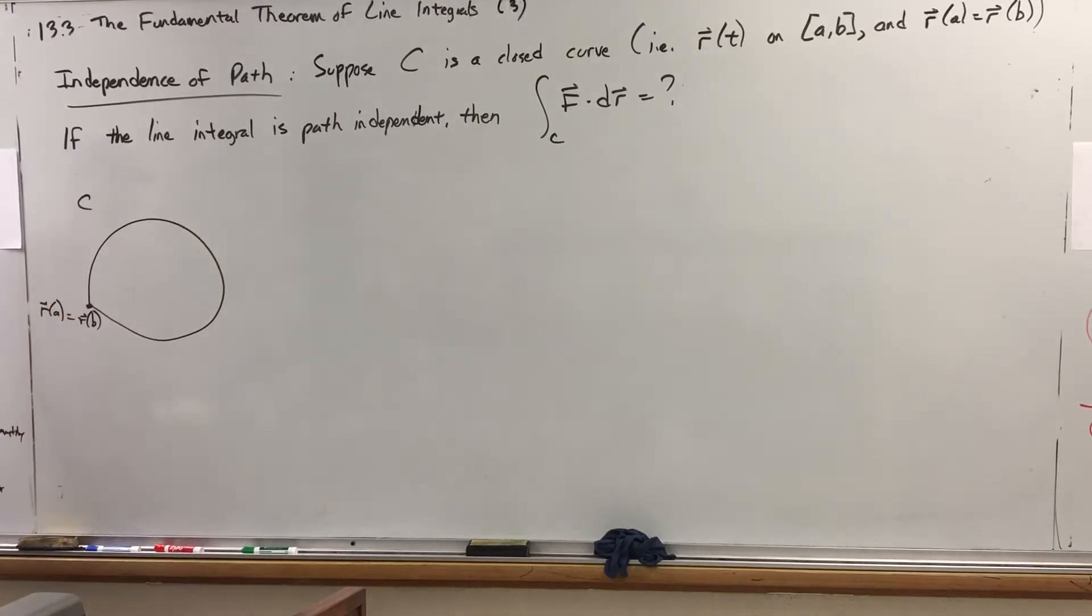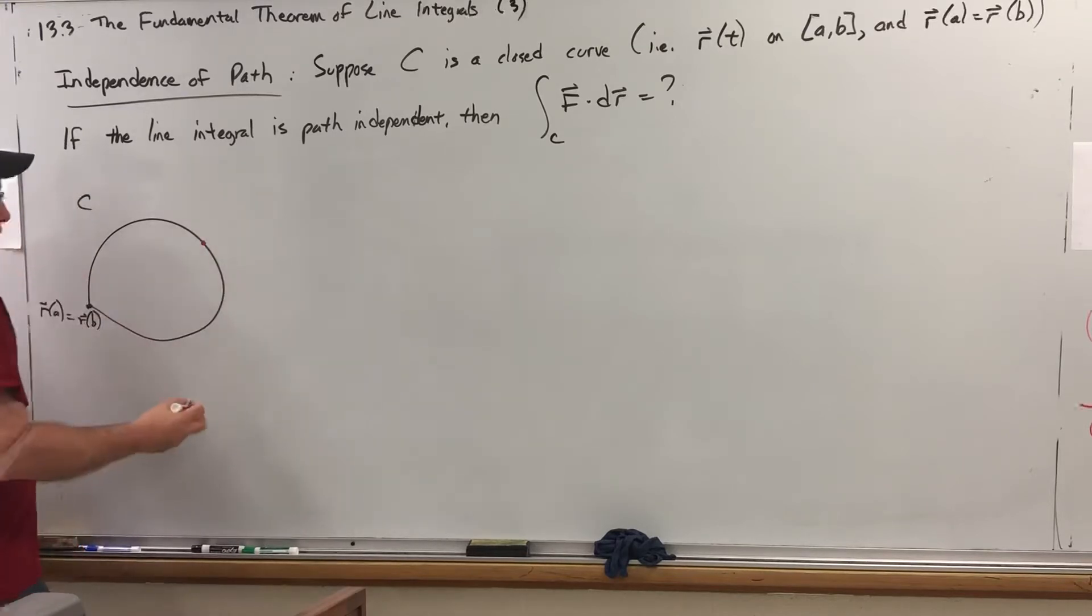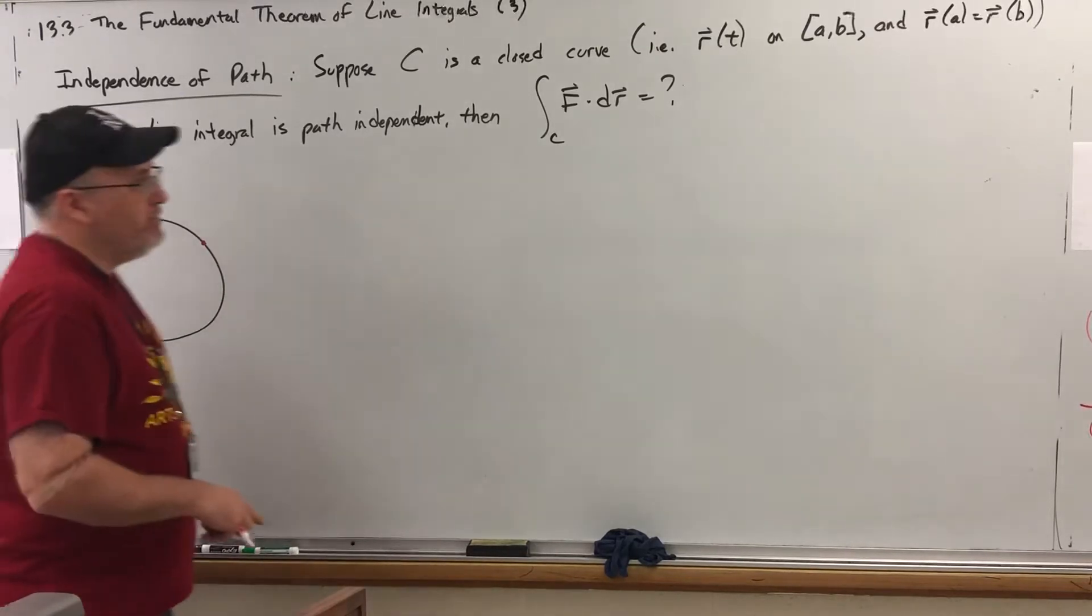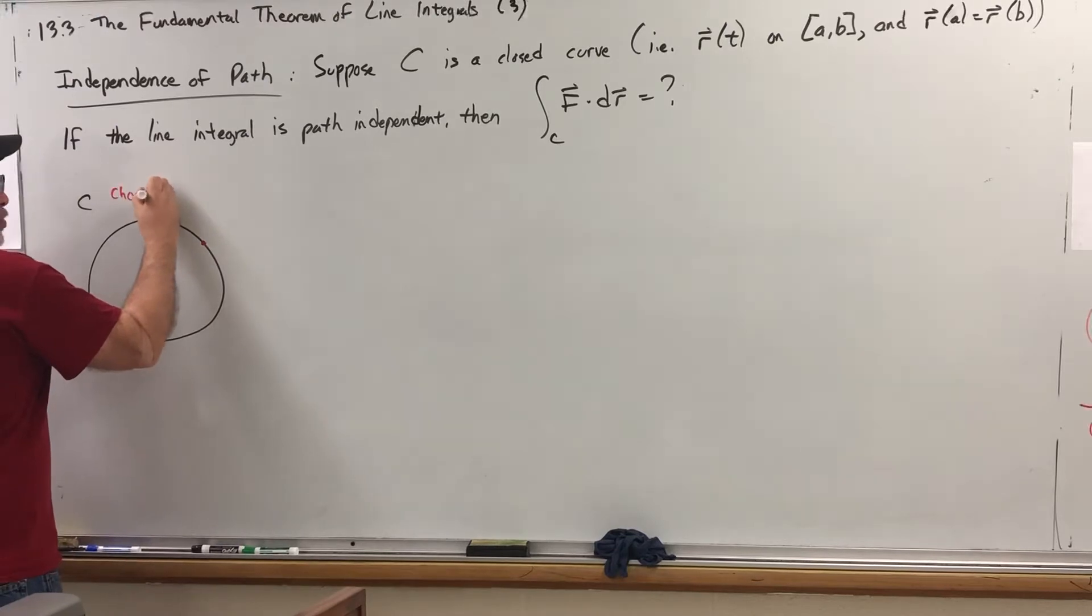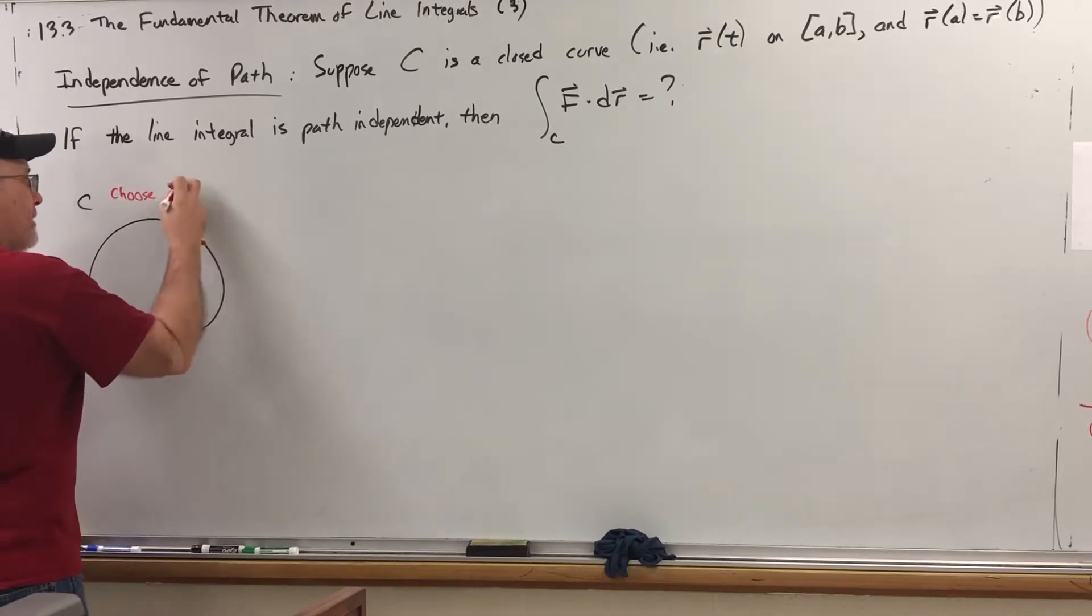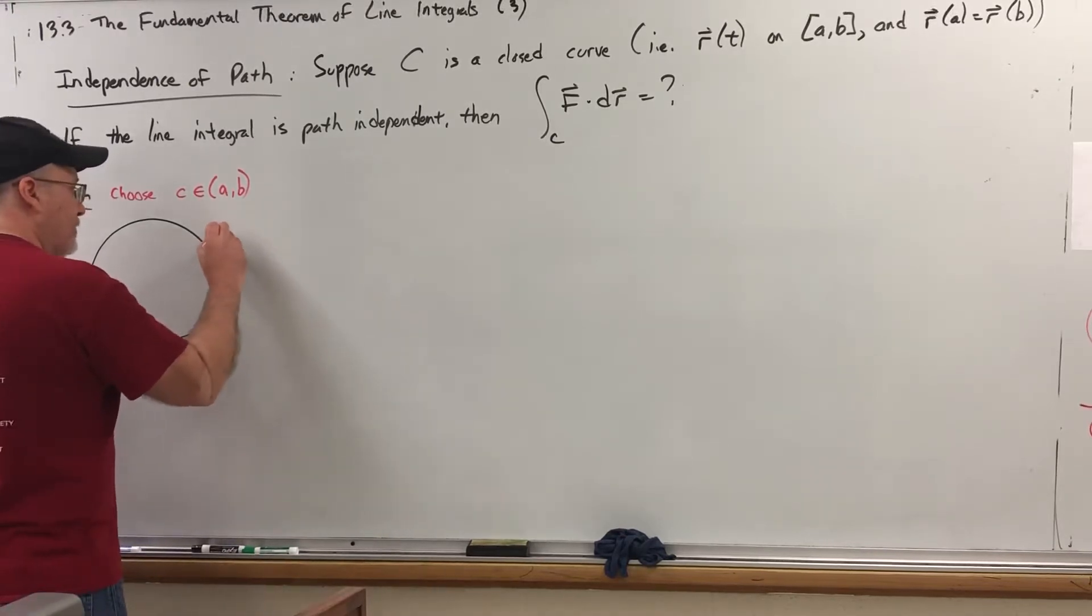Well, if we're going to talk about being path independent, then we need to talk about two paths that have the same initial point and the same terminal point. Right now, we have one path whose initial and terminal point coincide. But, we can partition this into two paths by picking some point in the middle. Now, keep in mind that this R is defined from A to B. So, let's pick some point in the middle and call it C. So, let's choose some point C, an element of the open interval AB. Open because we don't want it to be the beginning and we don't want it to be the end. We want it to be somewhere in between. So, this would be R of C right here.